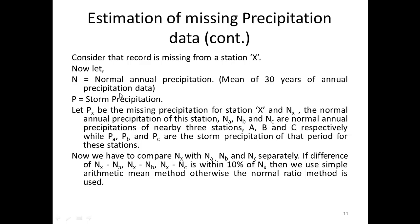Now we have to compare Nx with NA, NB, and NC separately. If the differences Nx minus NA, Nx minus NB, and Nx minus NC are all within 10% of Nx, then we use the simple arithmetic mean method; otherwise we will use the normal ratio method.